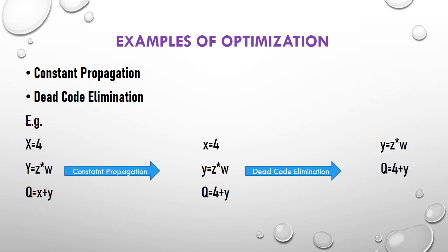There are two kinds of optimization shown here: constant propagation and dead code elimination. Given three lines — x = 4, y = z * w, and q = x + y — the value of x is set to 4 and is used by the third statement. Since x has not been changed between the first and third statements, x is a constant, so in the third statement x can be replaced by 4. The statements become: x = 4, y = z * w, and q = 4 + y.